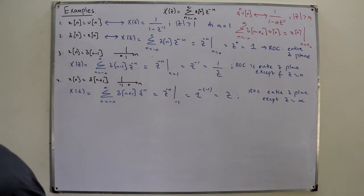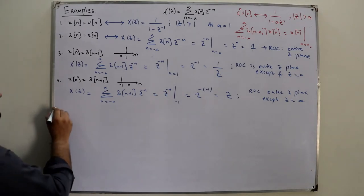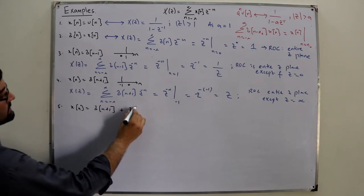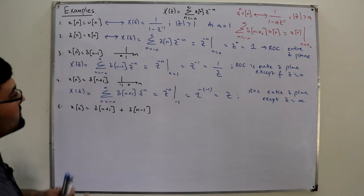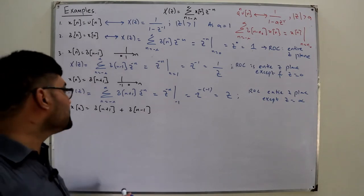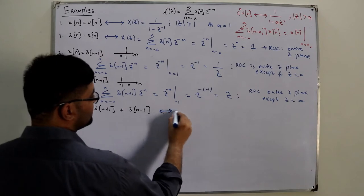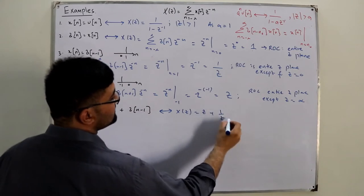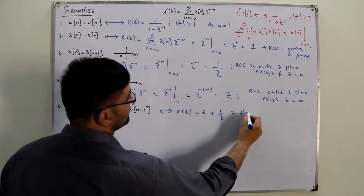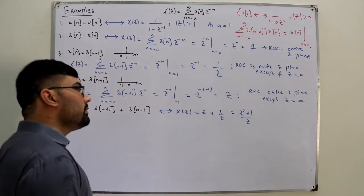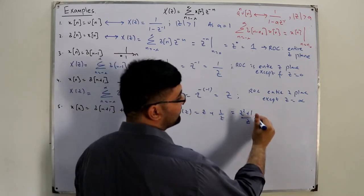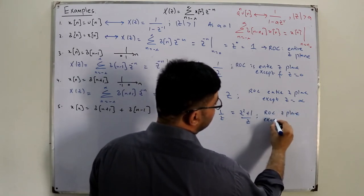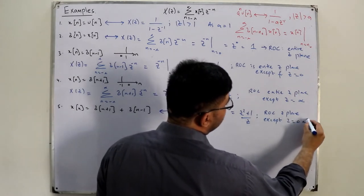If you have the combination of these two — x(n) = δ(n + 1) + δ(n − 1) — using the linearity property, X(z) = z + 1/z = (z² + 1)/z. The ROC is the entire z-plane except both z = 0 and z = ∞.